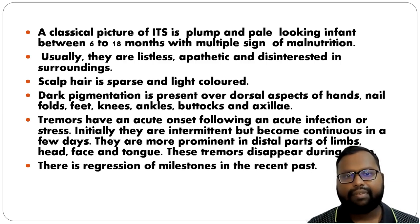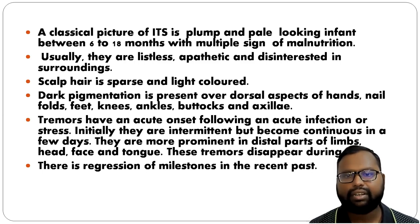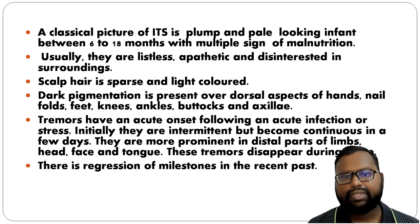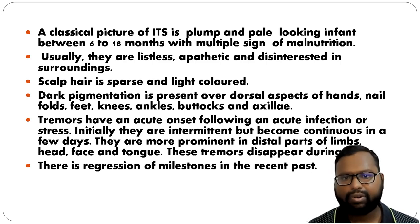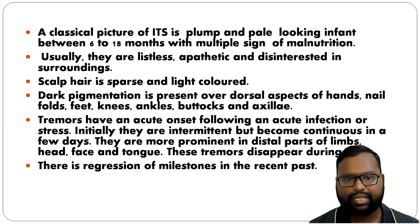Tremor has acute onset following acute infection or stress. It may be initially intermittent but becomes continuous later on. These tremors are mostly prominent in the distal part of the limb, head, face, and tongue. Tremors usually disappear during sleep. You may also get regression of milestones.